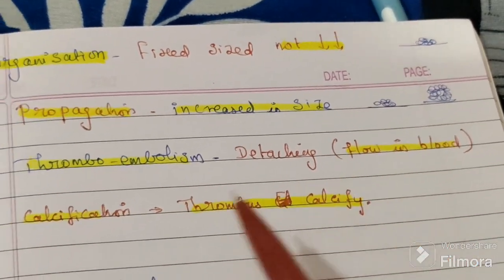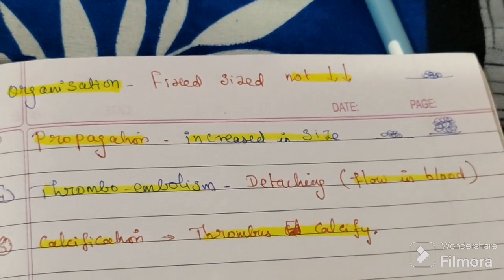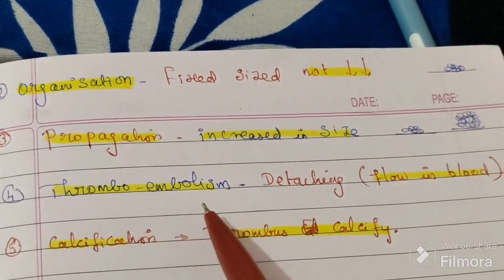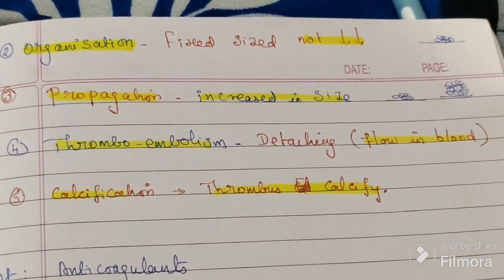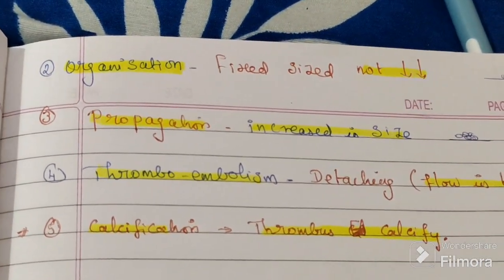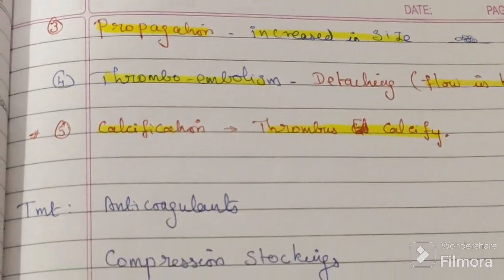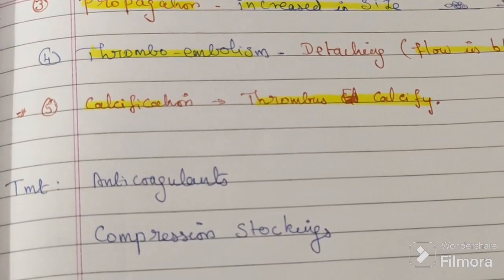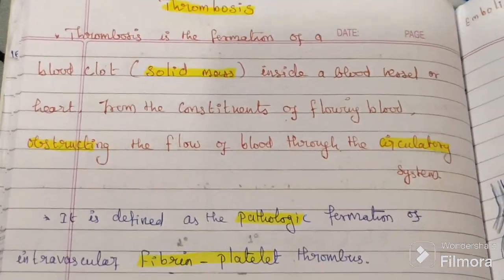Thromboembolism: the thrombus detaches and flows in the blood, potentially affecting other organs. To summarize: resolution means decreasing in size, organization means fixed size, propagation means increasing in size, and thromboembolism means it flows in the blood. There is also a chance of calcification — the thrombus can calcify. For treatment, we use anticoagulants and compression stockings to manage blood clots in the vascular lumen.